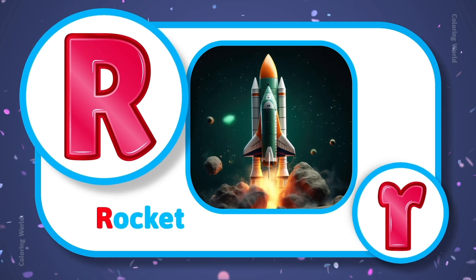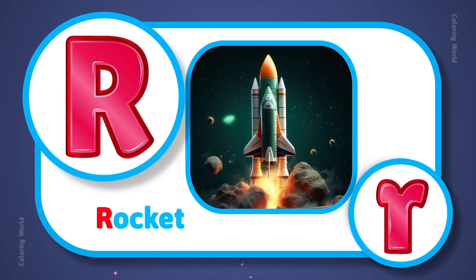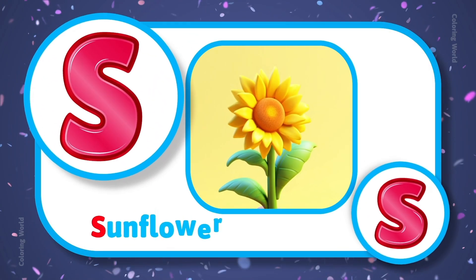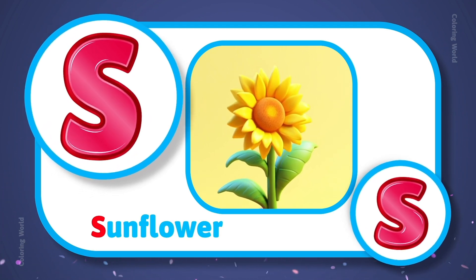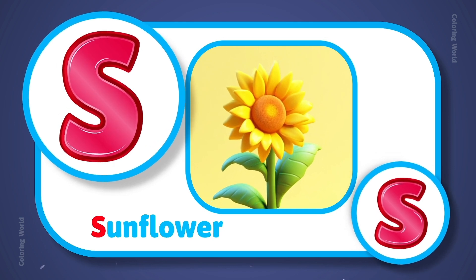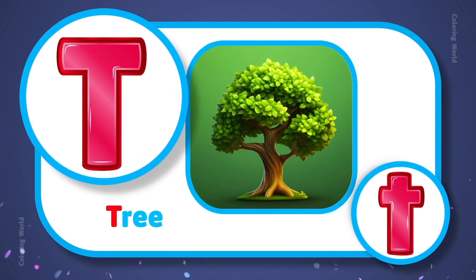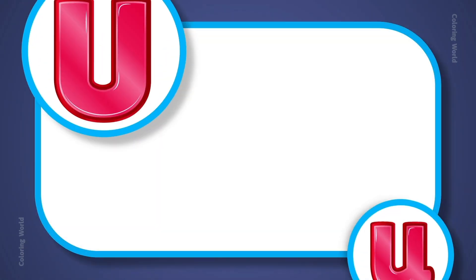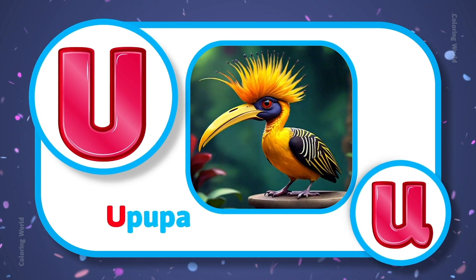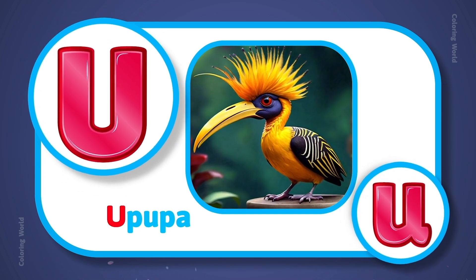R is for rocket, R, rocket. S is for sunflower, S, sunflower. T is for tree, T, tree. U is for upupa, U, upupa.